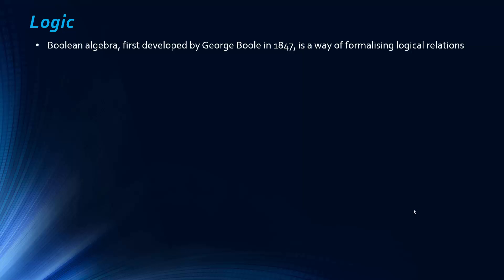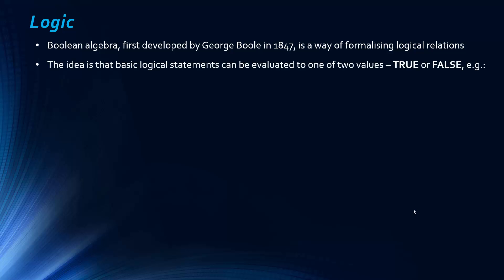Boolean algebra was first developed by a man named George Boole in 1847. It's basically a way of formalising logical relations. In the way that numerical algebra deals with variables and numbers, Boolean algebra deals with Boolean values — true or false. Basic logical statements can be evaluated to one of two values: true or false, or in computers, one or zero in binary. For example, 'the score was 2-1' is either true or false depending on the actual score.